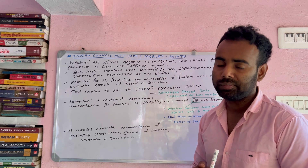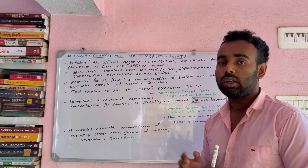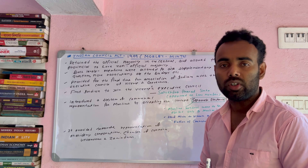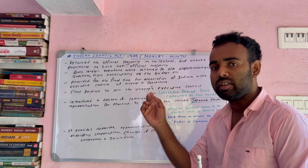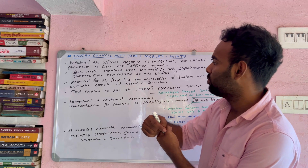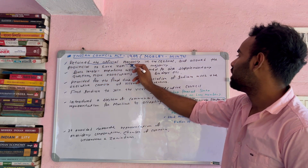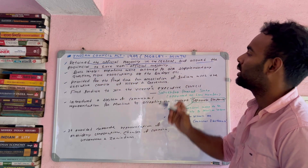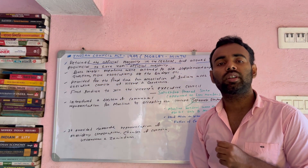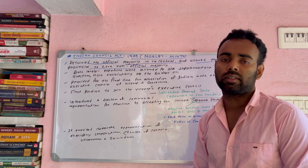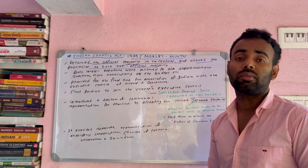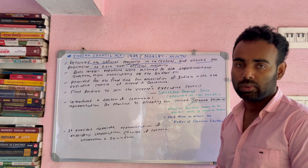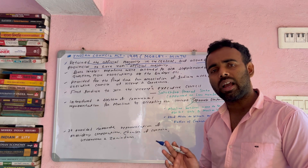There were many legislative councils — central legislative council and also provincial legislative council. The key point is to retain the official majority in the central, but allow the provincial councils to have a non-official majority. The central legislative council was given permission to keep official majority while the provincial legislative council allowed non-official majority.